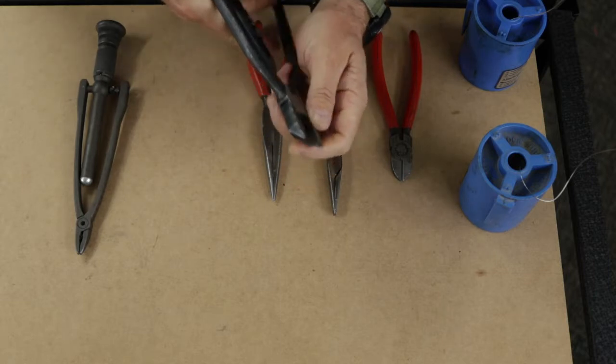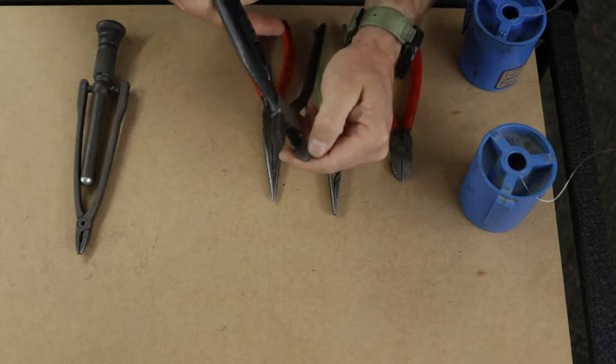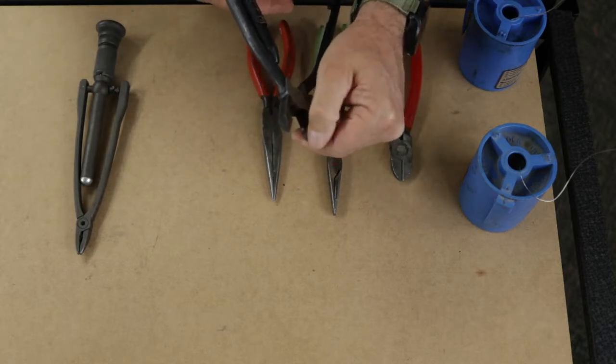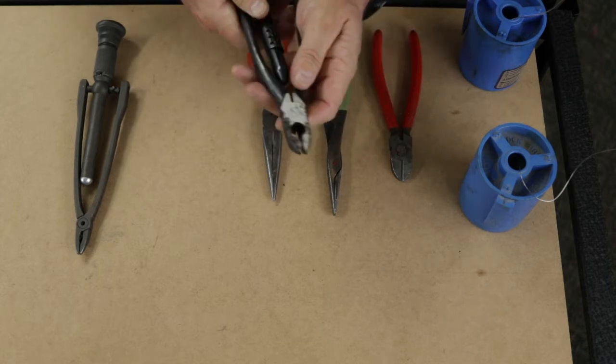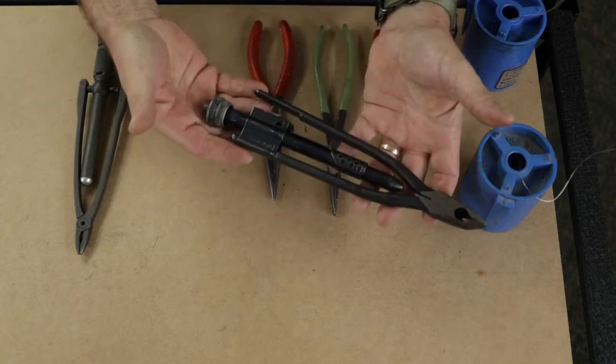These pliers have a knurled surface in the jaw to grip the wire. This can be problematic. It can mar the wire. But on simple tasks these pliers are very good.